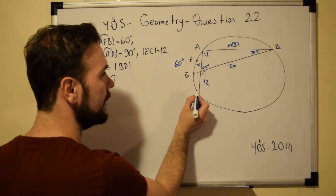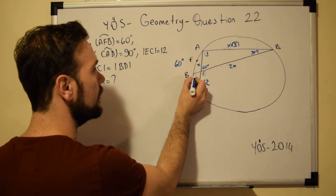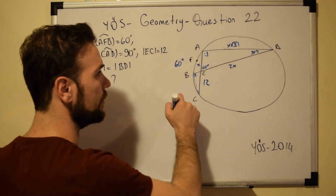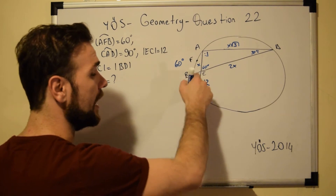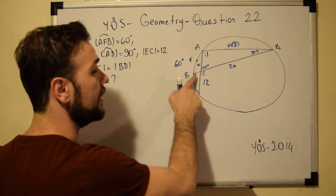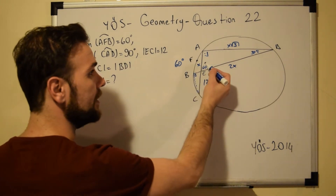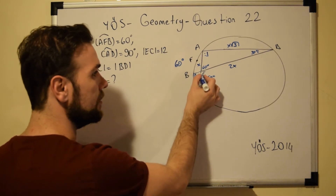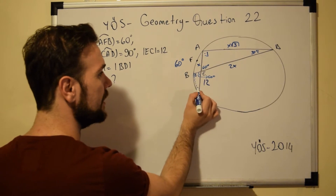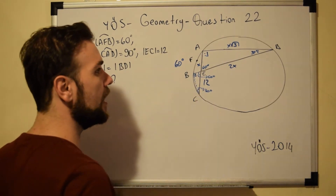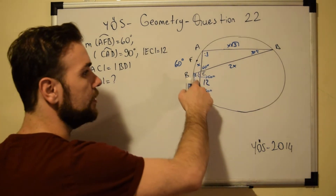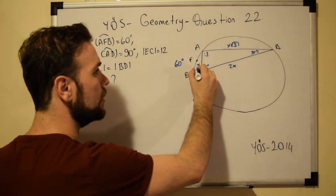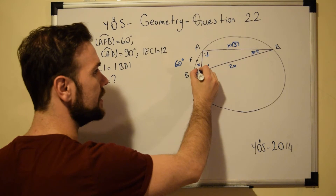I will draw a perpendicular line to side BE, creating a 90 degree angle. This gives a small right triangle. If this angle is 60 degrees, then this angle is also 60 degrees, and since we have a 90 degree angle, this remaining angle will be 30 degrees. Since the side in front of the 90 degree angle is 12, the side in front of the 30 degree angle will be half of that — which is 6.